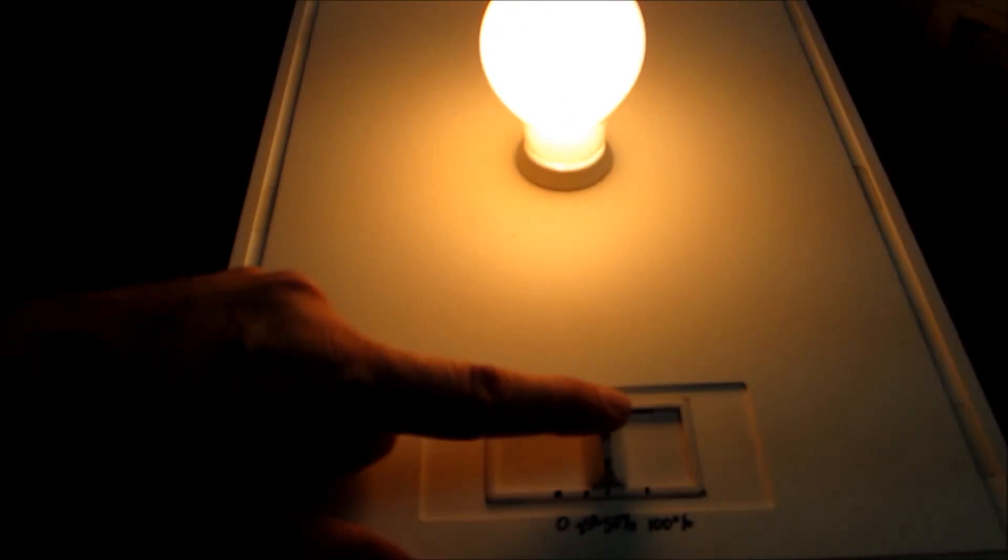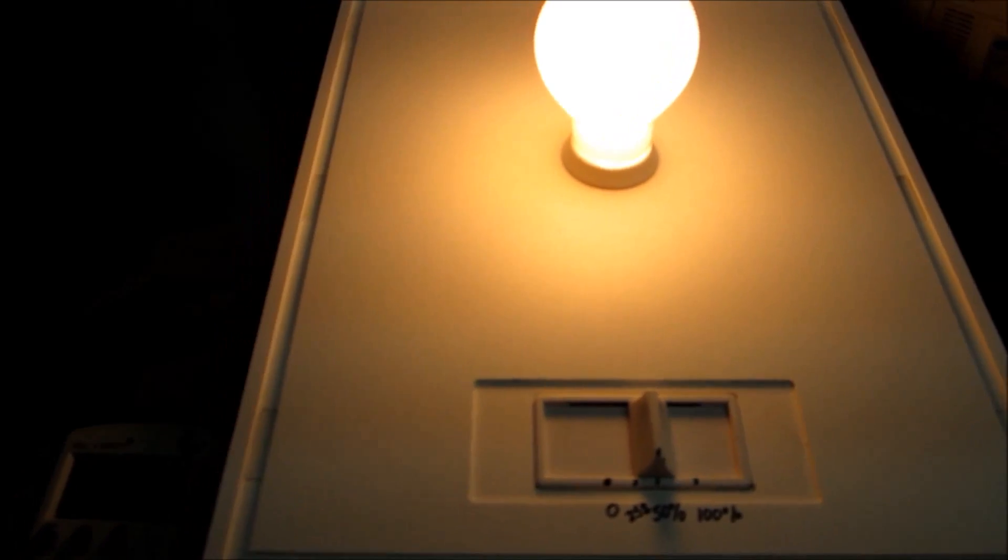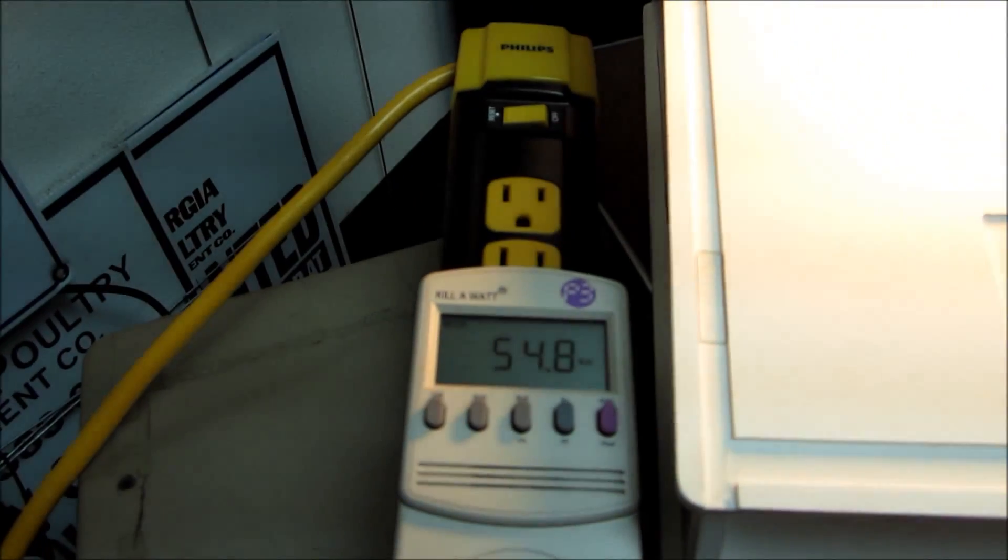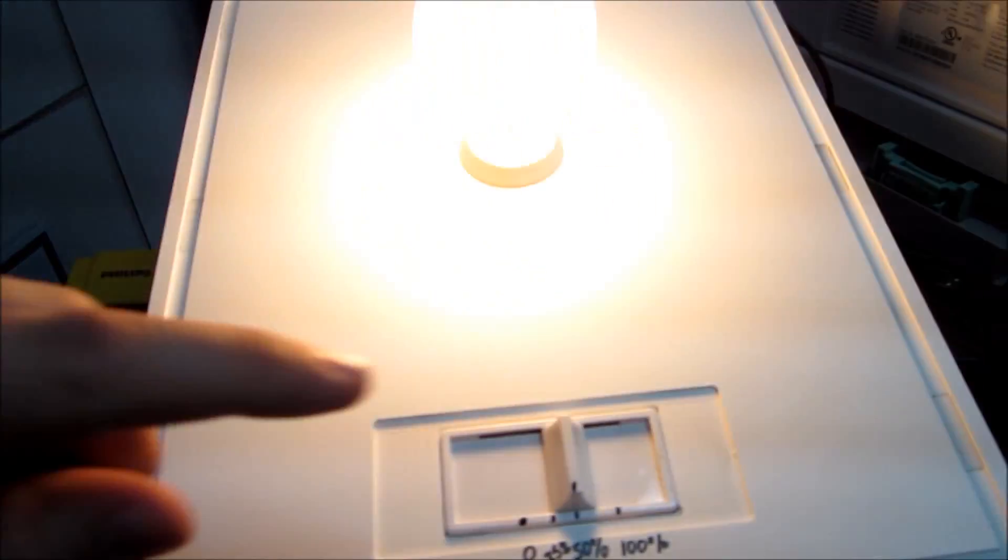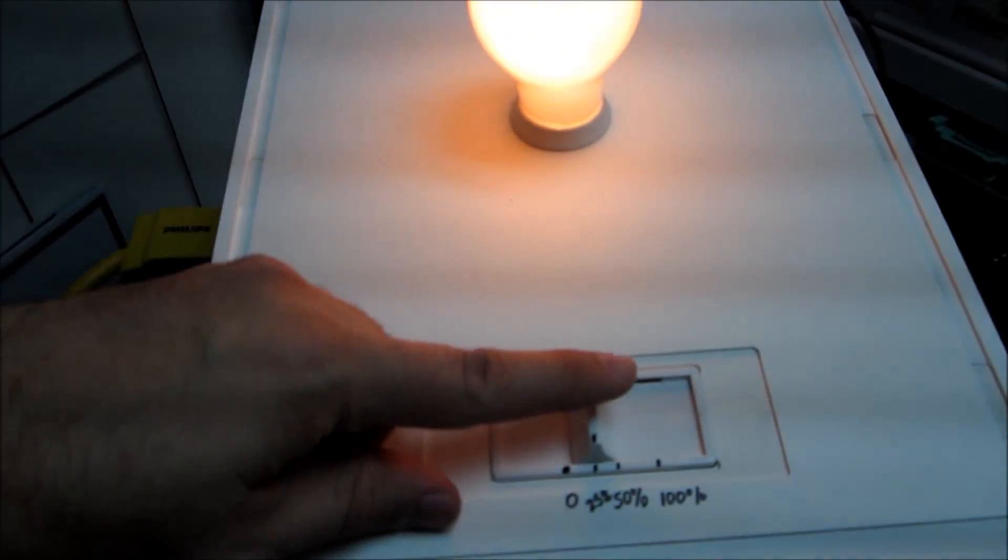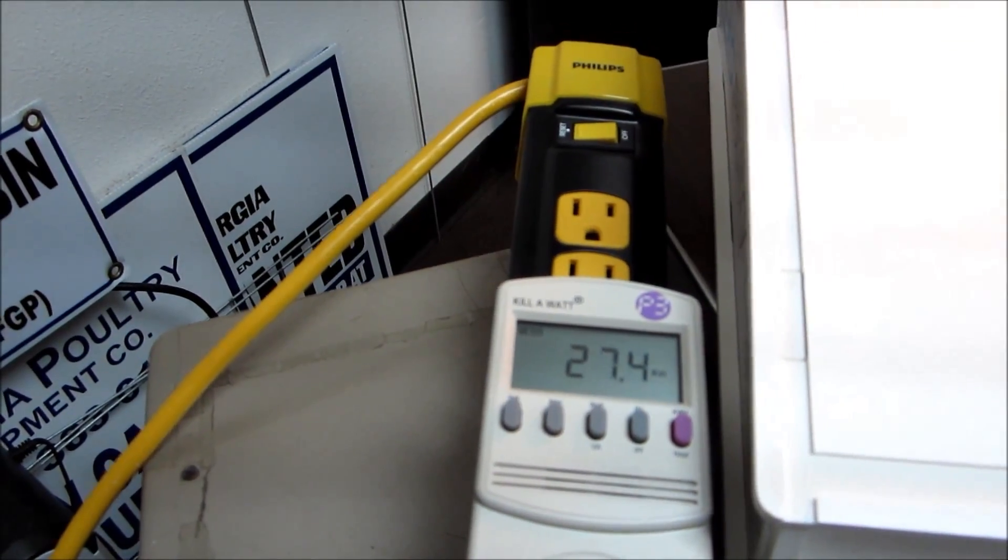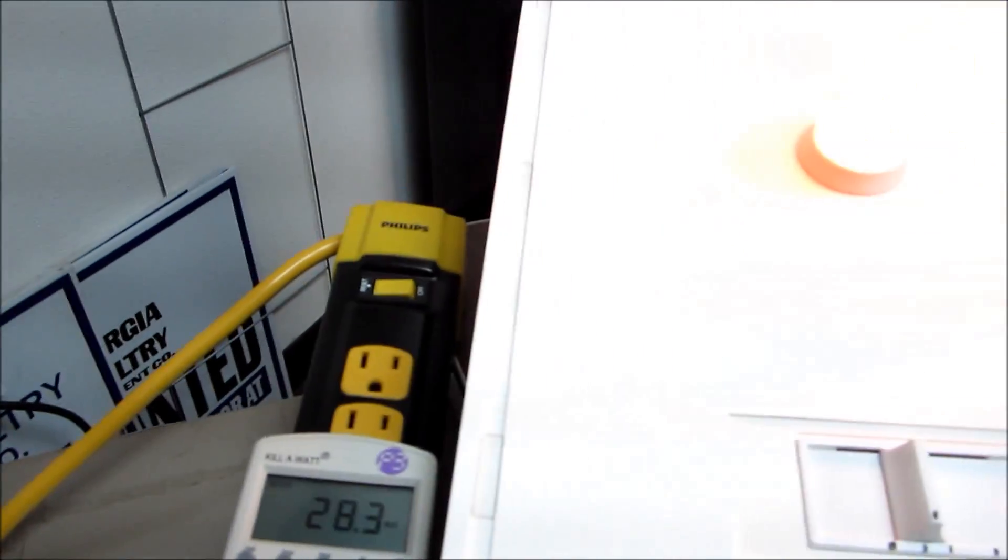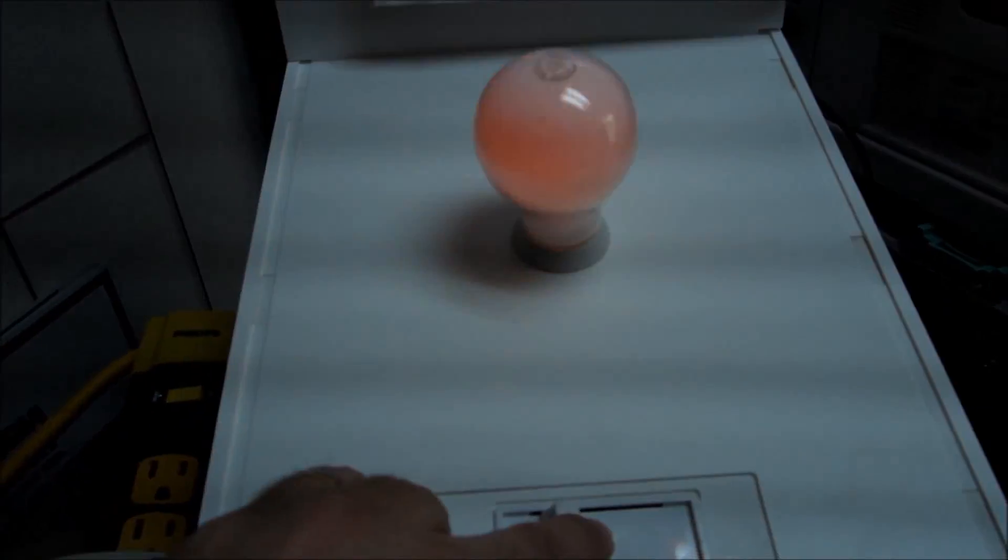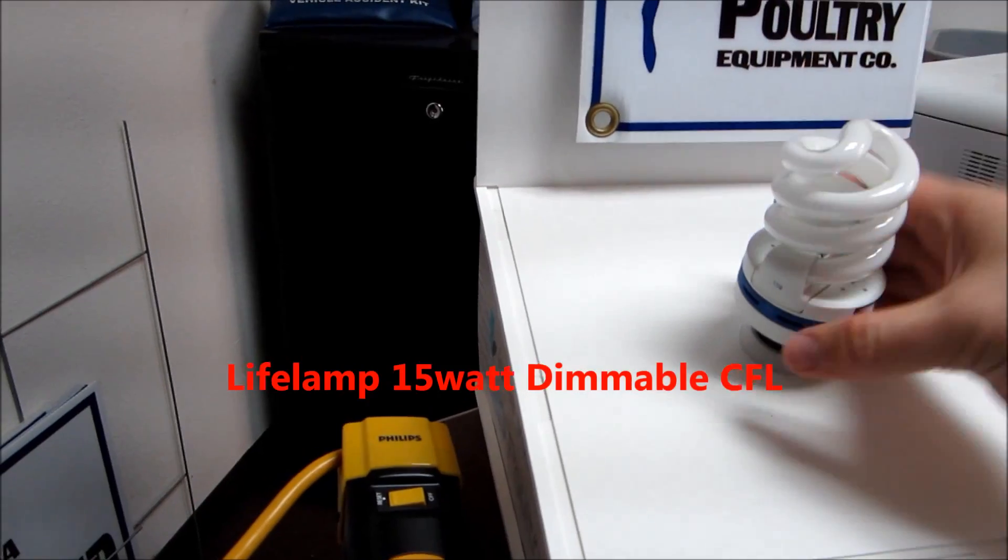Now I am going to dim it down to the 50% mark on the slide dimmer and the bulb is using basically 55 watts give or take. And then on to 25% which is 26 to 28 watts.